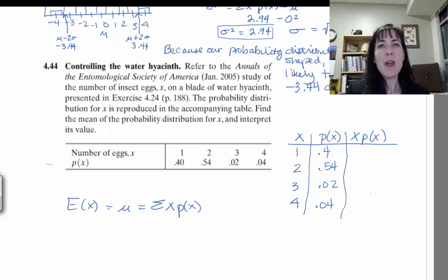And then I multiply them, so the x times the probability of x. So one times 0.4 is going to be 0.4, two times 0.54 is going to be 1.08, three times 0.02 is 0.06, and then four times 0.04 is 0.16.